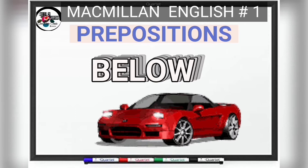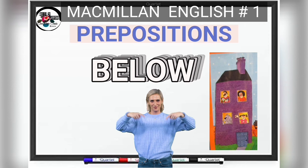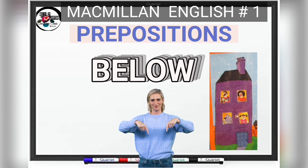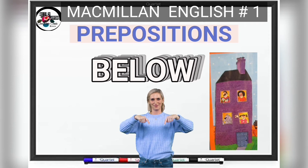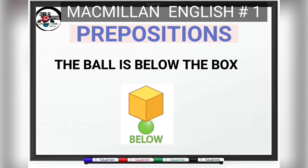Going back to the same plane concept — consider the apartment below. If I am talking about my neighbor below, it is because we are on the same plane in the building, in the same line, and he or she is below me with a space between us. For example: the ball is below the box.